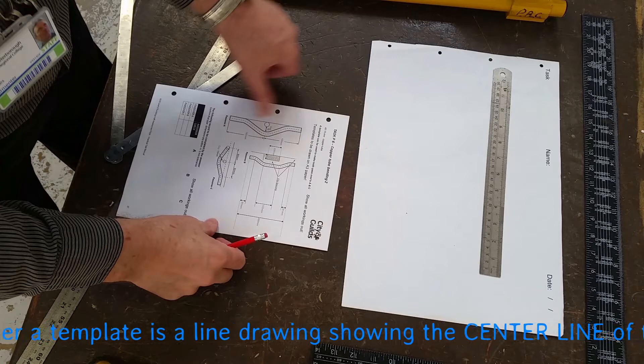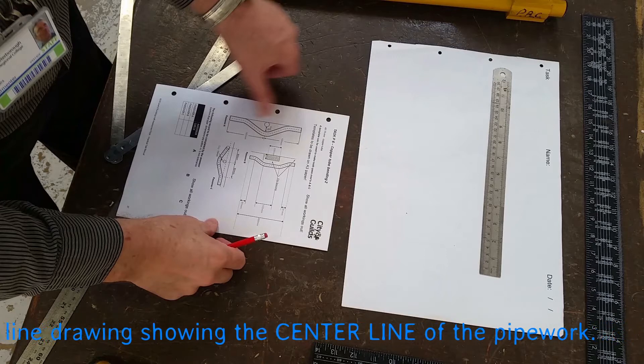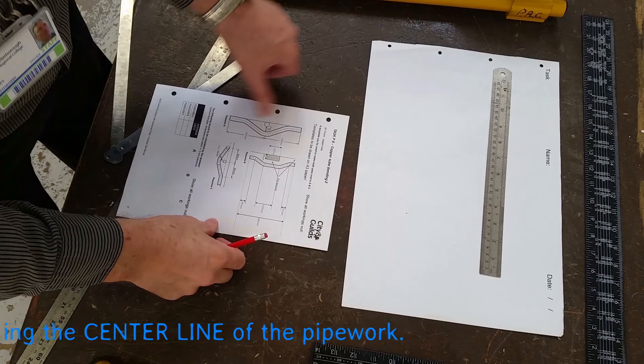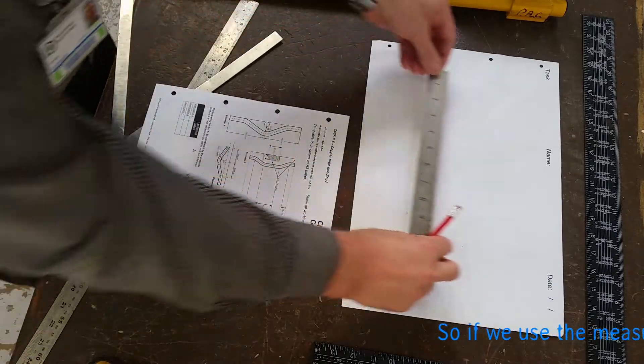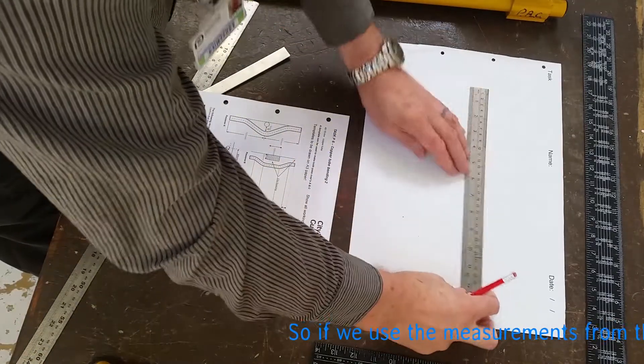Our template is a line drawing showing the center line of the pipework. So when we're bending it, when we're drawing it, we're always working on the center line of the pipework. What we're actually drawing is the center line drawing of the pictures on P6.